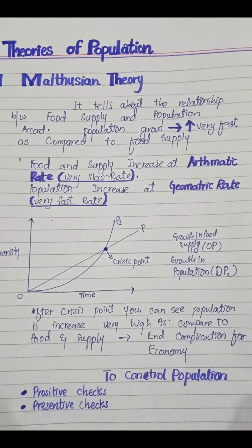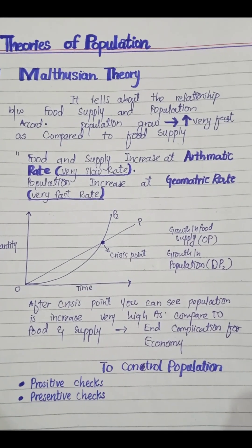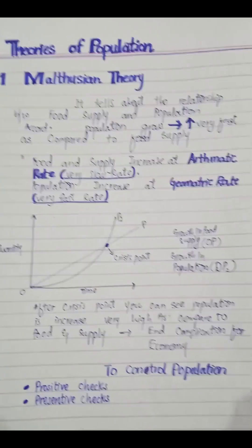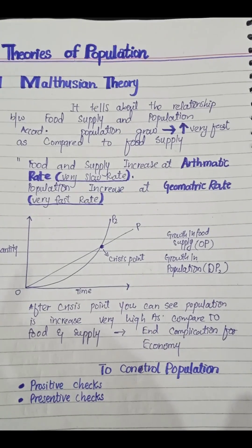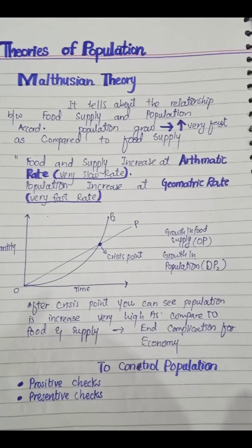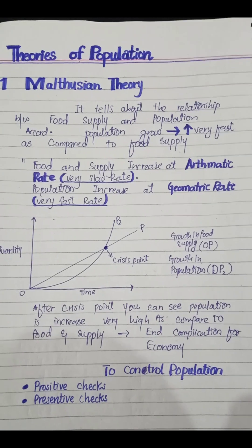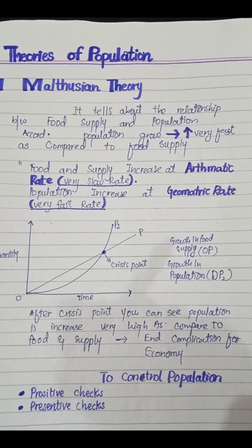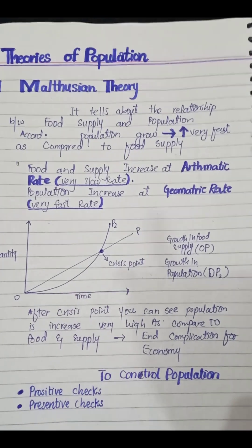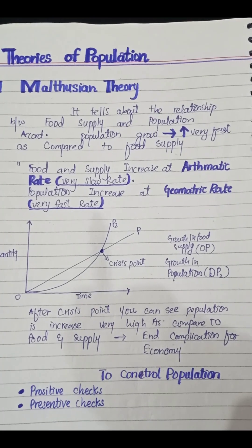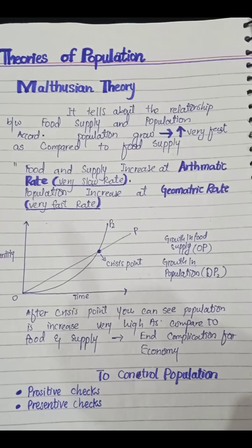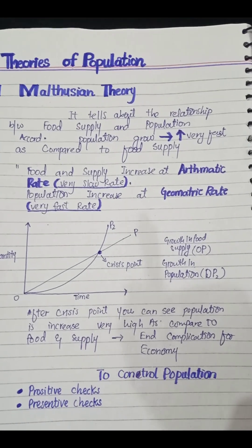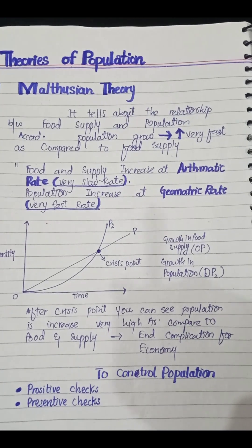According to this theory, food supply increases at an arithmetic rate, which is a very slow rate. On the other hand, population increases at a geometric rate, which is a very fast rate.